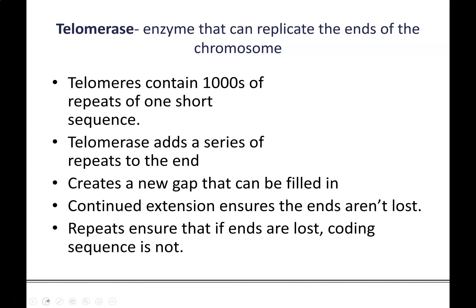Telomeres are the ends of the chromosome. The telomere region contains a section of repeats — thousands of short repeats of one sequence. This makes a buffer so that the ends of the telomeres, even if they are lost, don't degrade into coding sequence. But we actually have an enzyme that can take care of this problem. That enzyme is called telomerase, and telomerase's job is to replicate the ends of the chromosome — essentially to add back some additional repeats on the end.